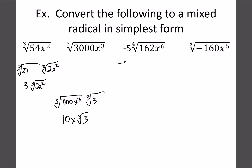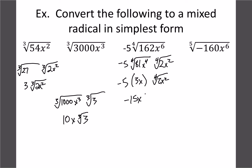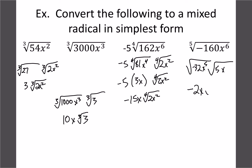For the fourth root: leave the -5 aside. ⁴√(162x⁶): 162=81×2, and for x⁶ under a fourth root pull out multiples of 4 — take out x⁴, leaving x² as leftover. ⁴√81=3, so we get 3x, times -5 gives -15x·⁴√(2x²). For the fifth root: ⁵√(-160x⁶) → 160=32×5, and from x⁶ pull out x⁵ leaving x. ⁵√32=2, so the final answer is -2x·⁵√(5x).